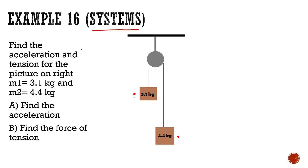When I look at the free-body diagram, there's going to be a force of gravity going down for this one — we'll call that 31 newtons — and a force of tension going up. We don't know what that force of tension is. For this other one, there's a force of gravity of 44 newtons and a force of tension, which we don't know either. But we do know these two forces of tension are equal to each other. This block is going to accelerate upwards and this block is going to accelerate downwards.